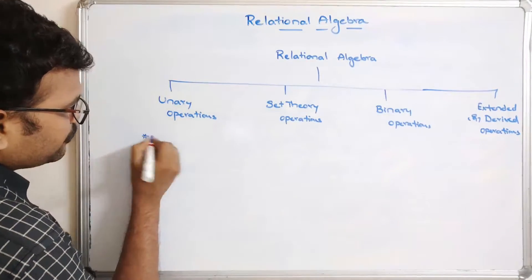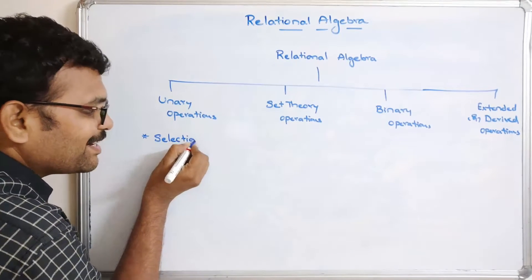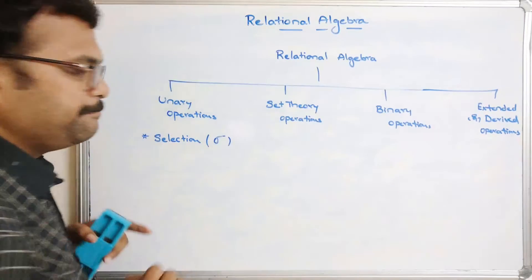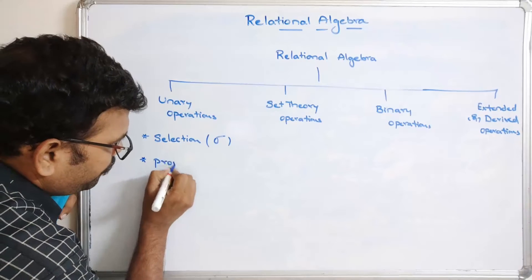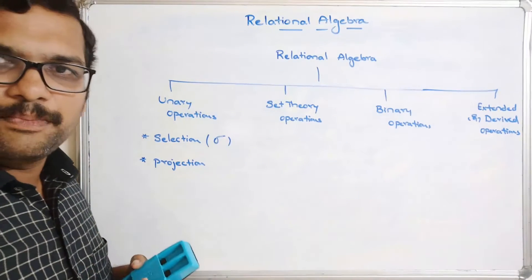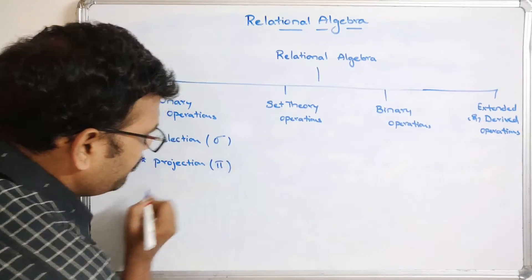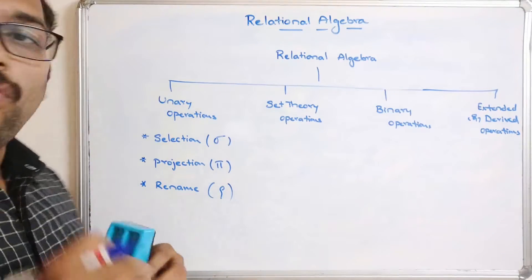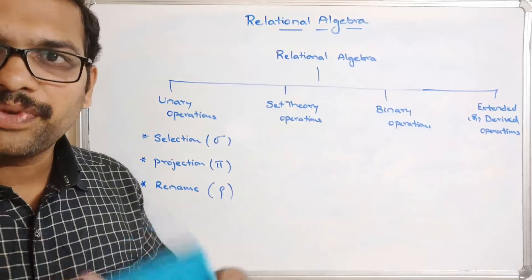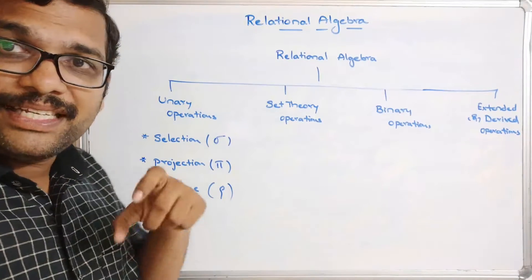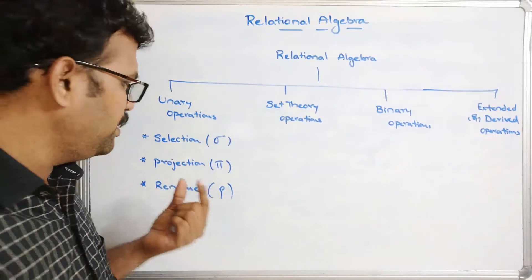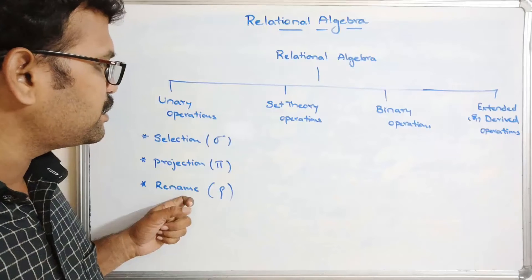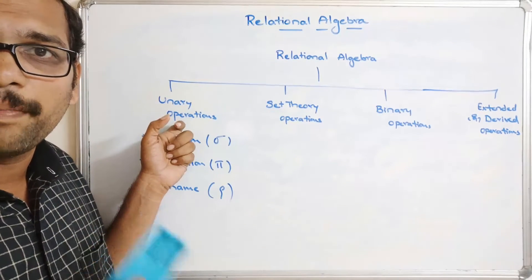Under unary operations, the first is selection, used to select data from a table, represented by sigma (σ). The second is projection, which determines what exactly to display from the table, represented by pi (π). The third is rename, represented by rho (ρ), which allows us to rename a table. All these operations are performed on a single relation, which is why we call them unary operations.